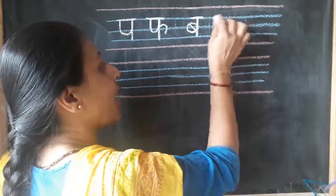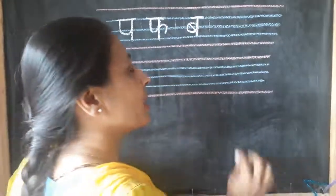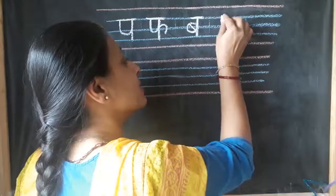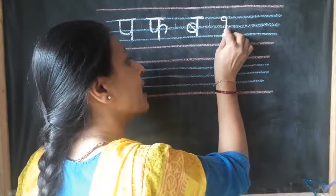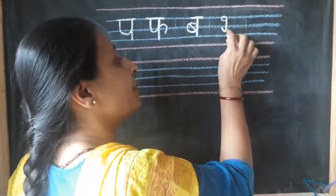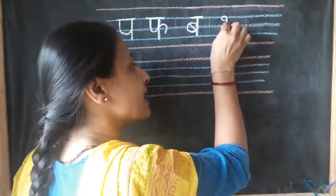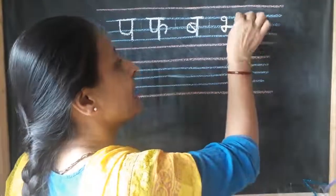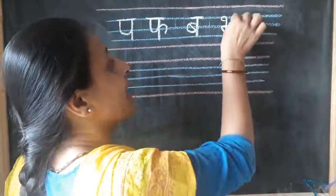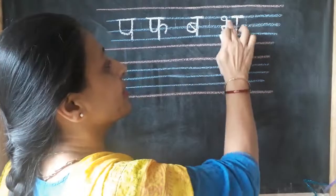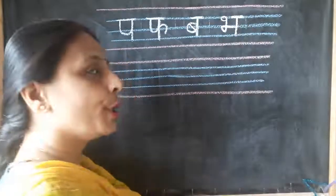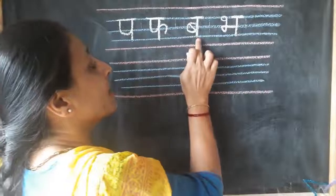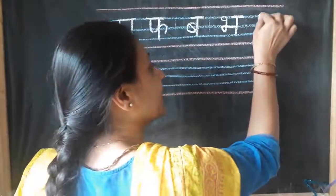Now after Ba, which letter will come? Bh — very good. Here I will draw one small loop and a standing line, come down, go up, make a J kind of shape and a slanting line which will cross the standing line. One standing line and a slanting line overhead, but we are not going to draw the slanting line on the loop. So: Pa, Fa, Ba, Bh, and Ma.